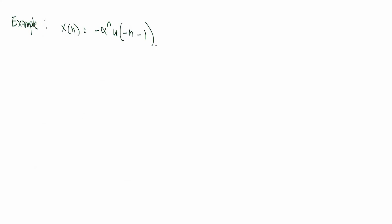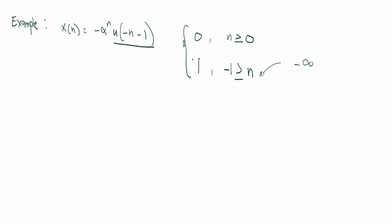Before we begin, we're always going to understand what kind of signal this is and also the problem itself. So as you can see, this unit step would specifically mean 0 if n is greater than or equal to 0, and then 1 if starting from negative 1 up to negative infinity, we will have a value of 1. So this kind of signal is an anti-causal signal.